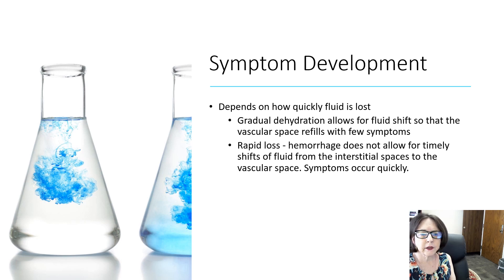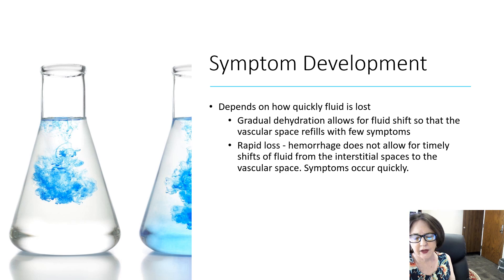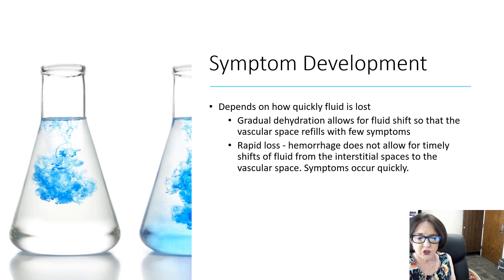How quickly symptoms of dehydration develop depends on how fast the fluid was lost. In gradual dehydration, this allows for a fluid shift so that the vascular space — the blood compartment, which gives us our blood pressure — can refill with few symptoms. Rapid loss, such as hemorrhage, doesn't allow for a timely shift of fluid, so symptoms can occur very quickly.